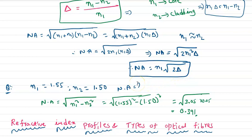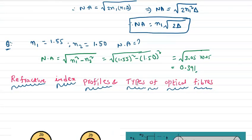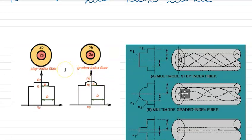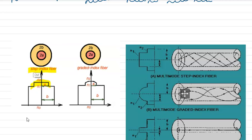In today's class, we are going to explain refractive index profiles and types of optical fibers. Optical fibers are generally classified into two types: step index and graded index. In a step index fiber, the refractive index changes in a step fashion, while in a graded index fiber, the refractive index gradually changes.